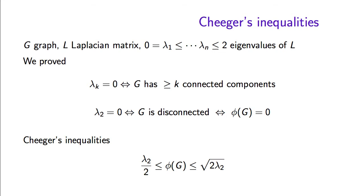The Cheeger inequalities give us that the expansion is at least half of λ₂, so in every graph where λ₂ is large, the expansion must be large. And the expansion is at most the square root of 2 times λ₂, so in every graph where λ₂ is small, the expansion also has to be small. There is a quadratic loss in this inequality, and as we will prove later, this quadratic loss is tight for some graphs.